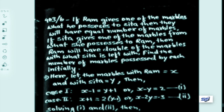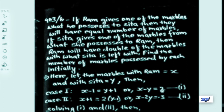As per the first case, if Ram gives one marble, Ram has x minus 1 and Sita has y plus 1, and they are equal. So x minus 1 equals y plus 1, which simplifies to x minus y equals 2. Let this be equation 1.